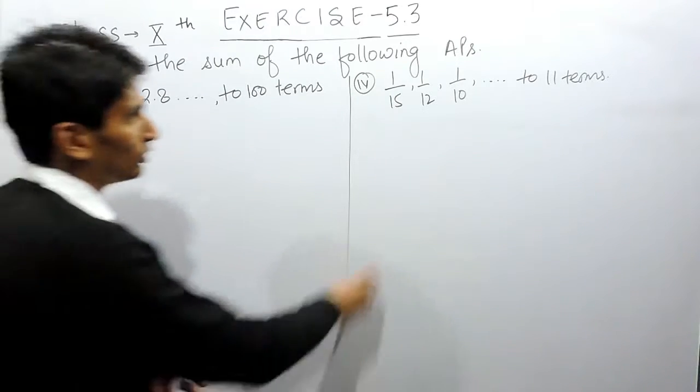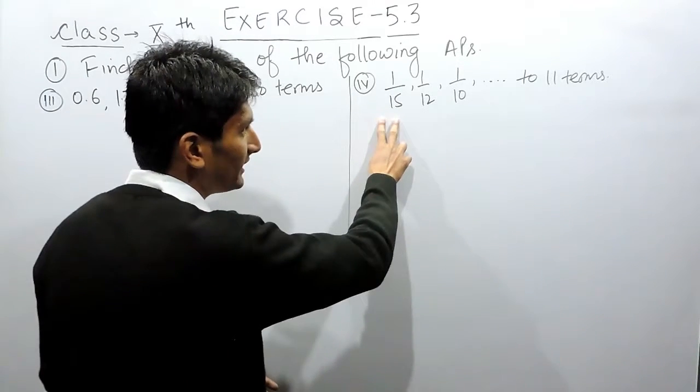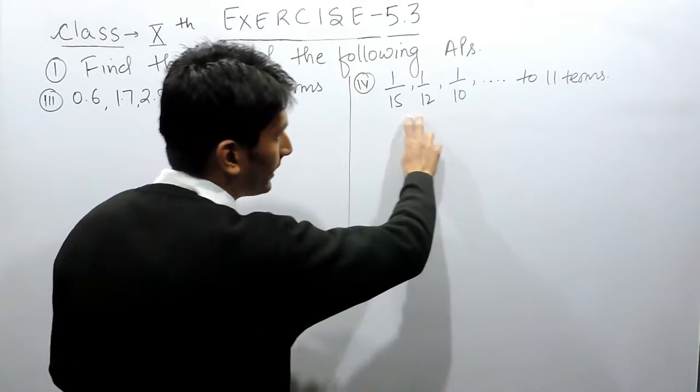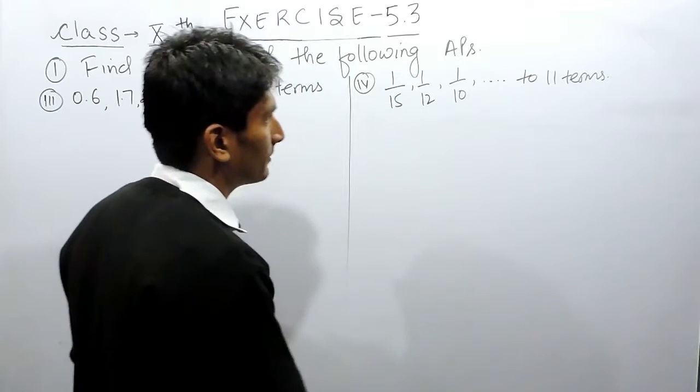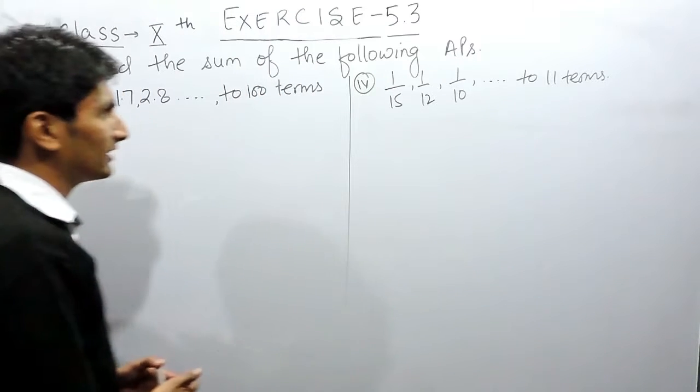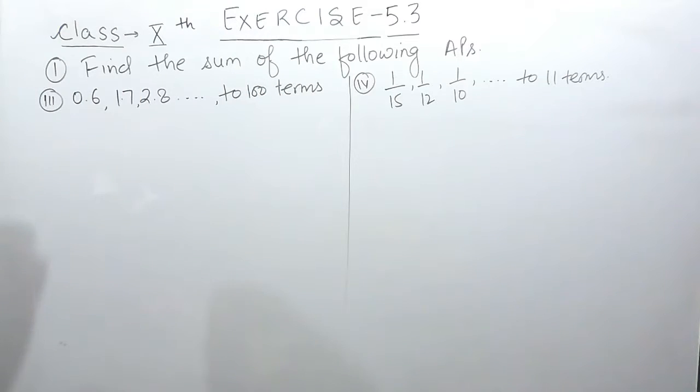And similarly in the other part, 1 upon 15 is the first term and you have to find the sum till 11 terms.